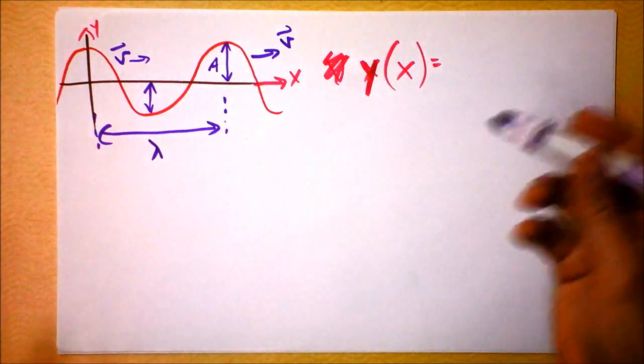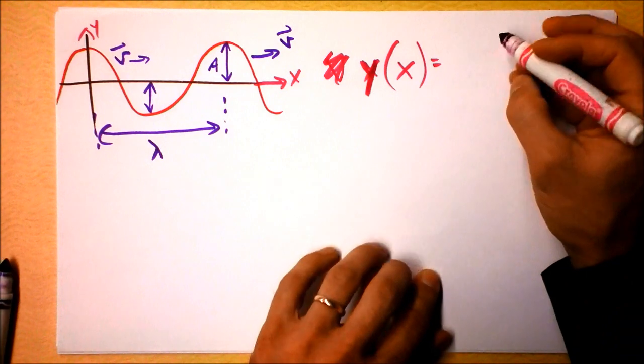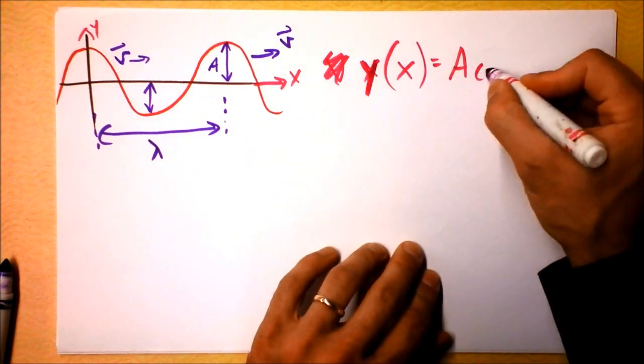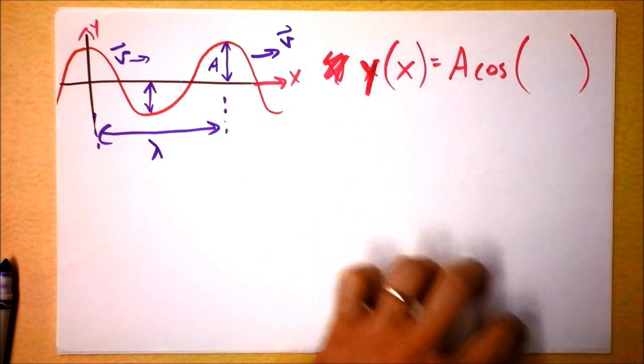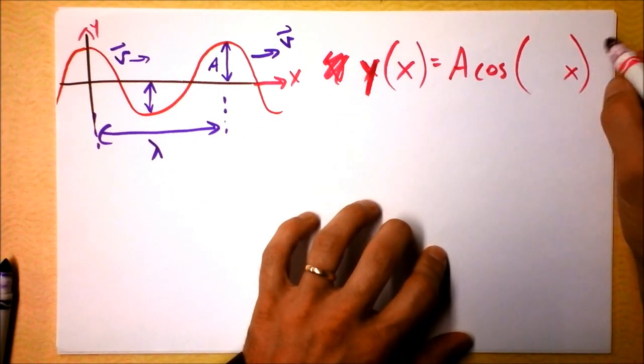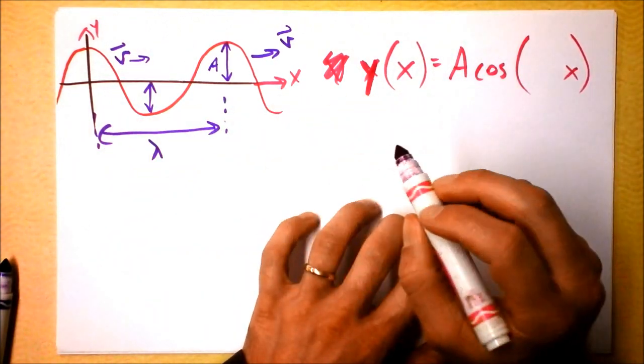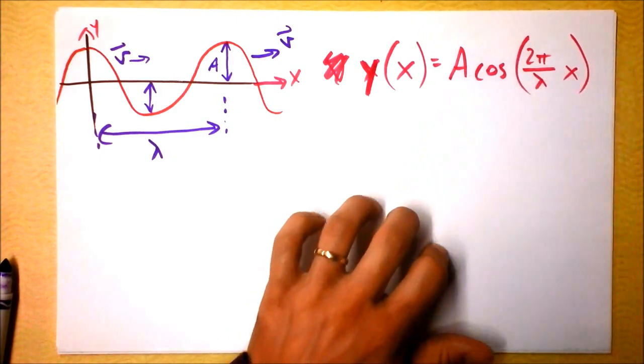And I want to throw this equation at you and see what you think. I'm proposing that the position is amplitude times cosine, because it's peaked at zero. Cosine of what? Cosine of x, because it will definitely depend on x, but also 2π over lambda.